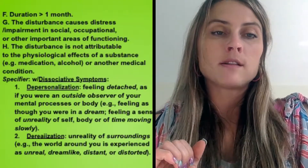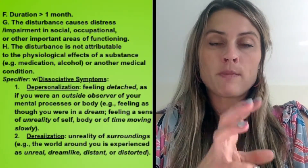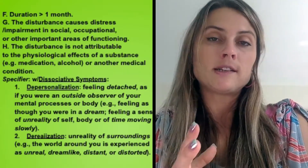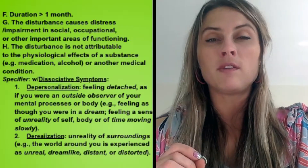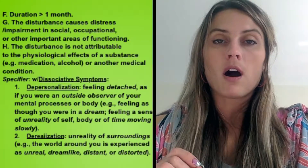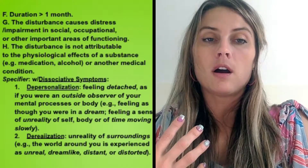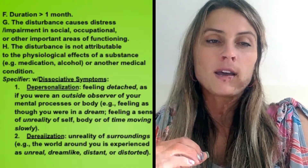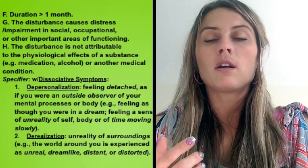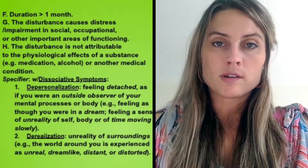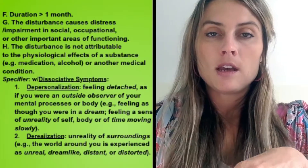Criterion F is duration of the disturbance — symptoms must persist for more than one month after the traumatic event. Criterion G is that the disturbance causes clinically significant distress or impairment, meaning you are now struggling socially, occupationally, or in your daily functioning and ability to do life. Criterion H, the last one, is that the disturbance is not attributable to the physiological effects of a substance or another medical condition — if a substance or medical condition has influenced the symptoms, then you cannot be diagnosed with PTSD.